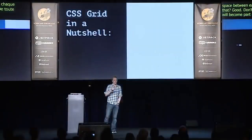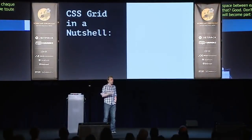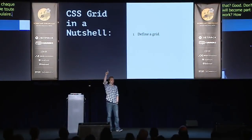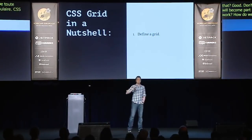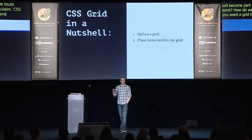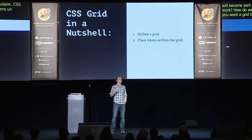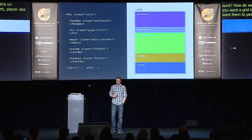CSS Grid in a nutshell — how does this actually work? How do we apply it? Number one: define a grid on an element where you want the grid to appear. Number two: place items within that grid where you want them to appear. Number three: make world peace. That's all there is to it.